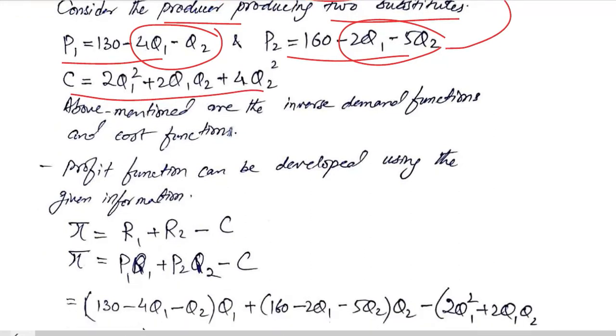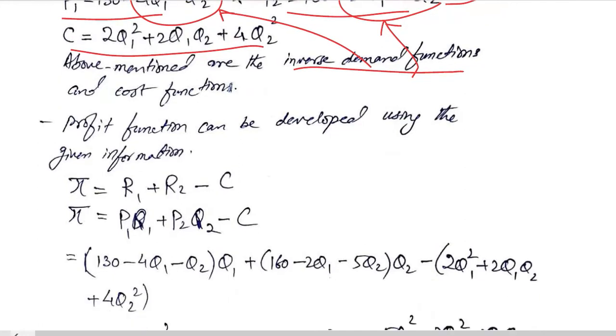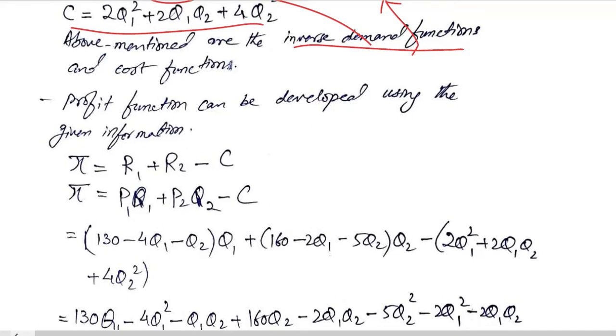Above mentioned are the inverse demand functions. Now we are in a position to find out the revenue functions R1 and R2 by multiplying the P1 function with Q1 and the P2 function with Q2.